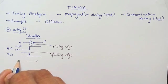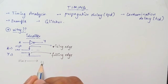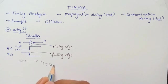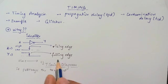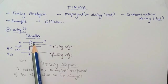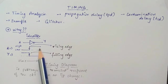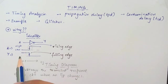Here we are plotting the input and output signals A and Y with respect to time. This type of diagram, where we plot input or output with respect to time, is called a timing diagram. A timing diagram portrays the transient response of the circuit when an input changes. This was the ideal case where transitions happen instantaneously, but practically even the input signal doesn't change instantaneously.